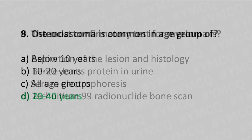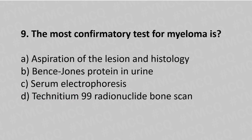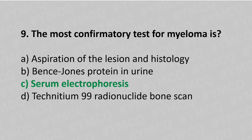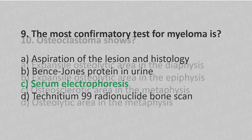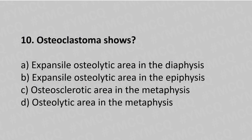Question number nine: the most common confirmatory test for myeloma is option A aspiration of the lesion and histology, option B Bence Jones protein in the urine, option C serum electrophoresis, option D Tc-99m radionuclide bone scan. The answer is option C, serum electrophoresis.